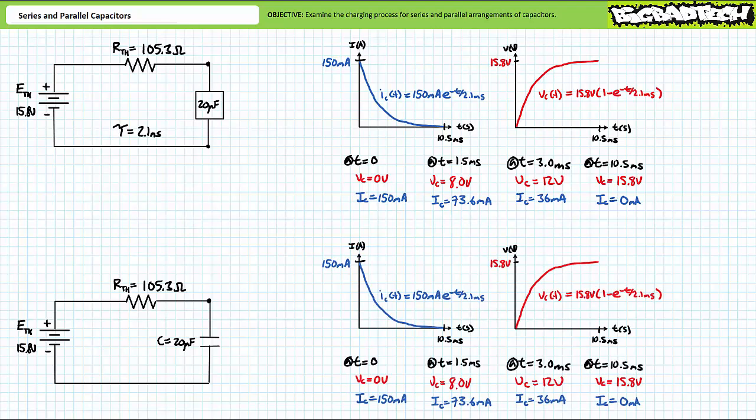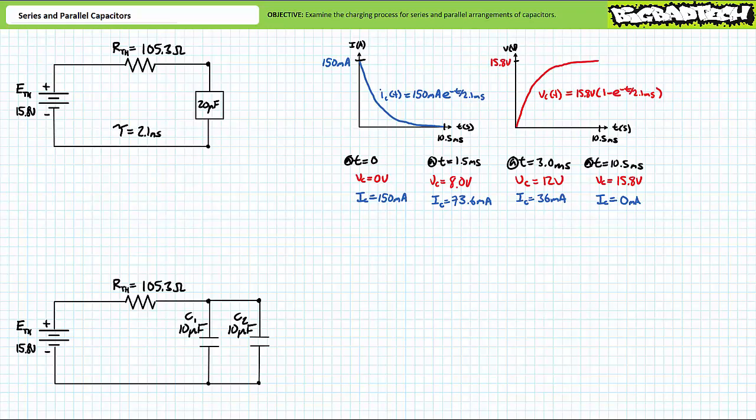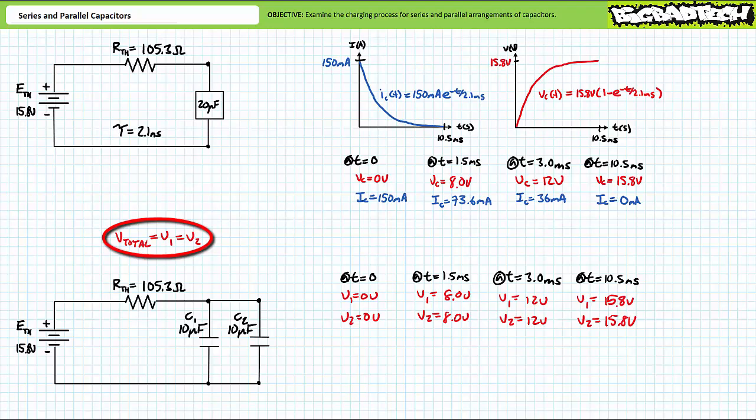Option two, also super easy: the elements inside the box are a parallel arrangement of identical capacitors yielding a total capacitance of 20 microfarads. Consider two 10 microfarad capacitors in parallel. Voltage across elements in parallel is the same. At t equals zero, both capacitors are initially uncharged at zero volts. By 1.5 milliseconds, both will have charged to roughly 8 volts. By roughly 3 milliseconds, both will have charged to 12 volts. At 10.5 milliseconds, both will be fully charged to 15.8 volts.